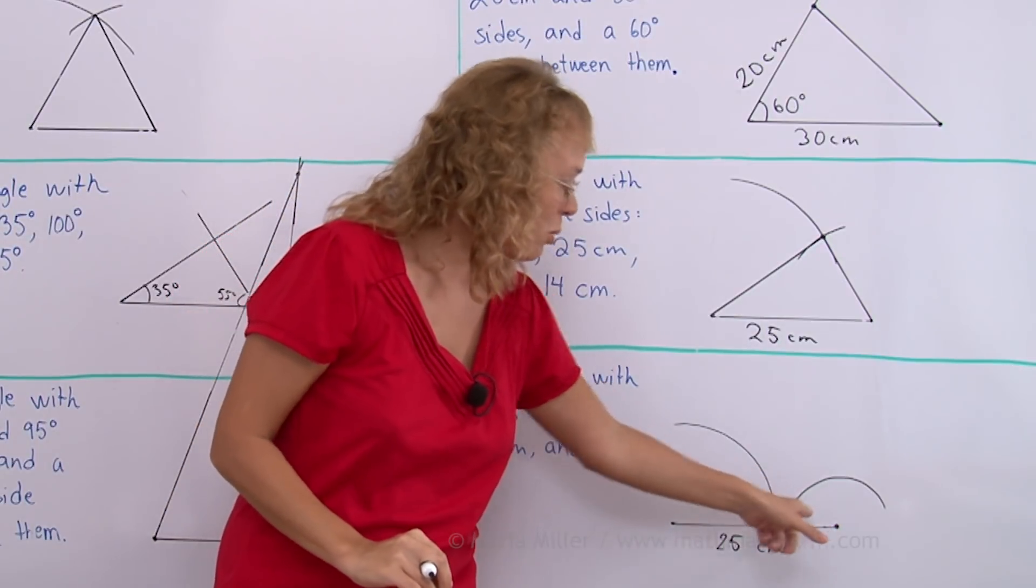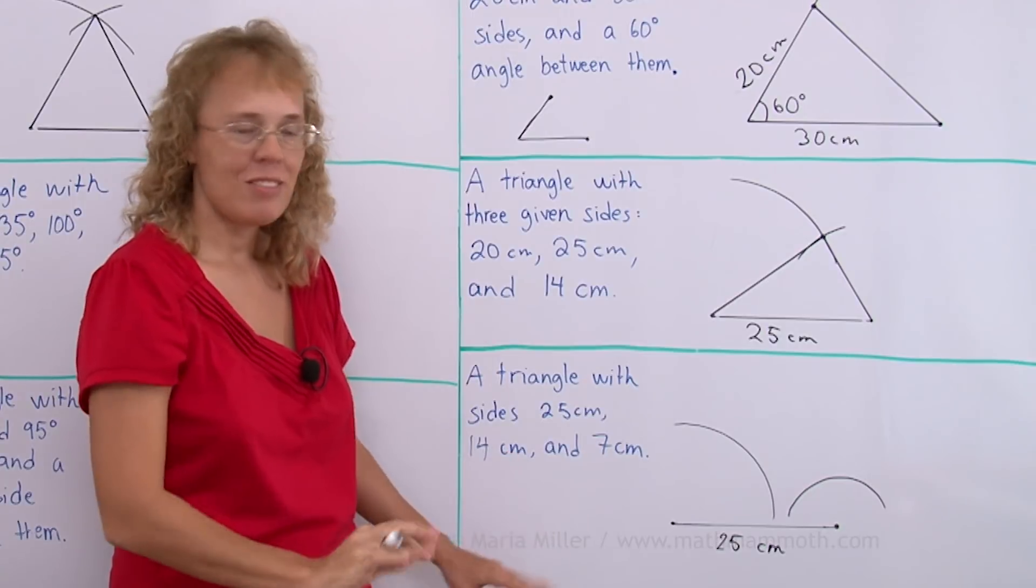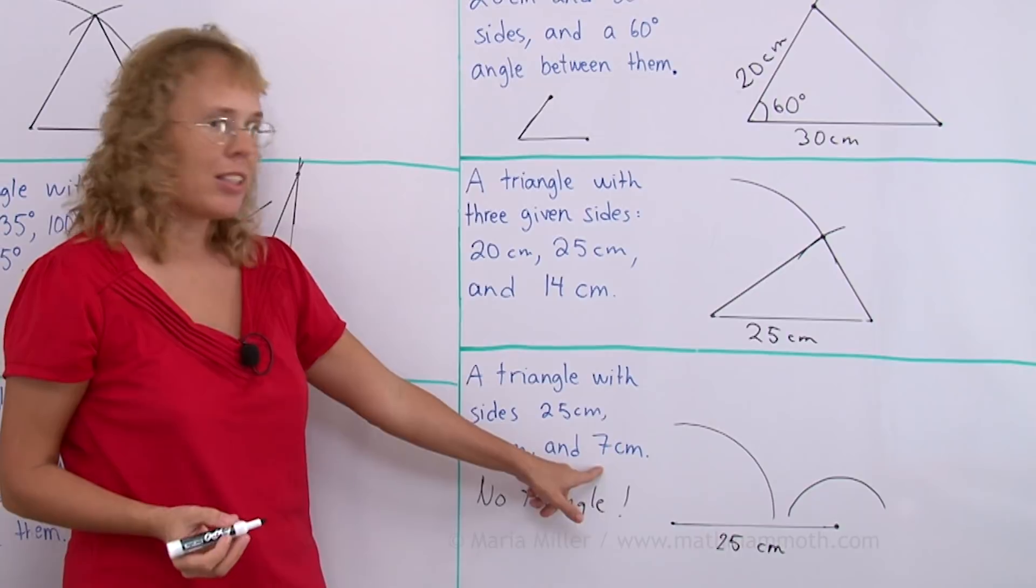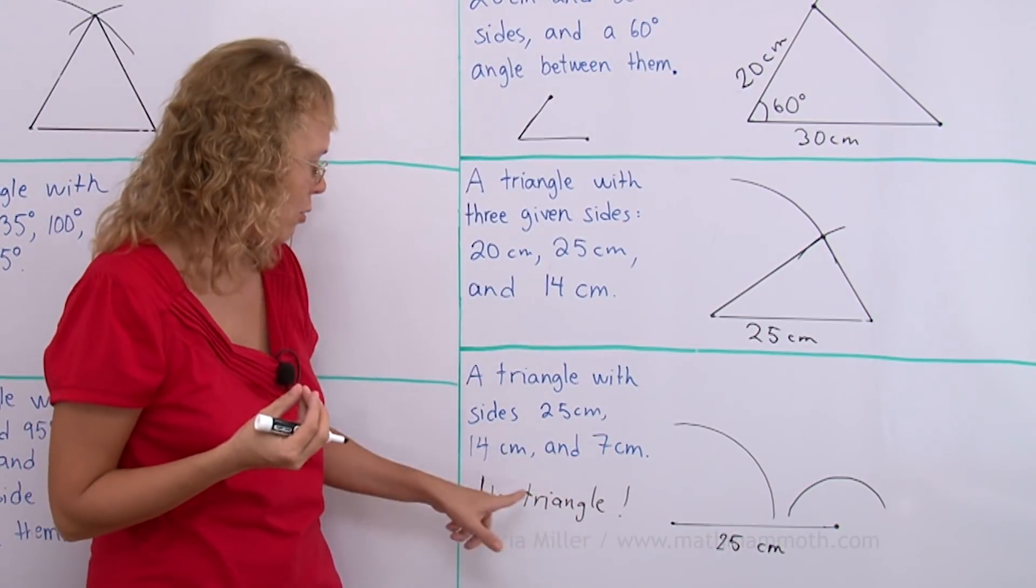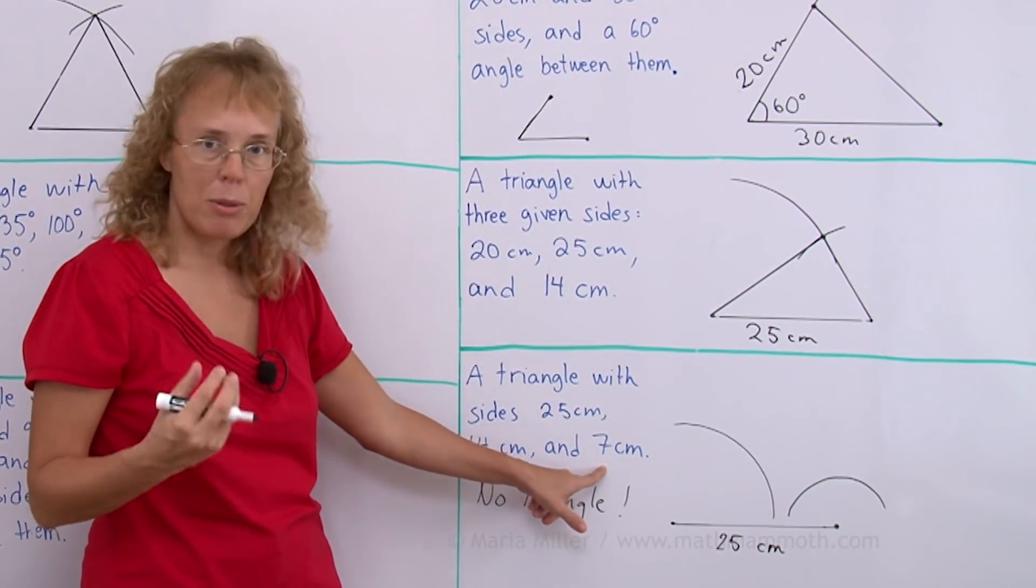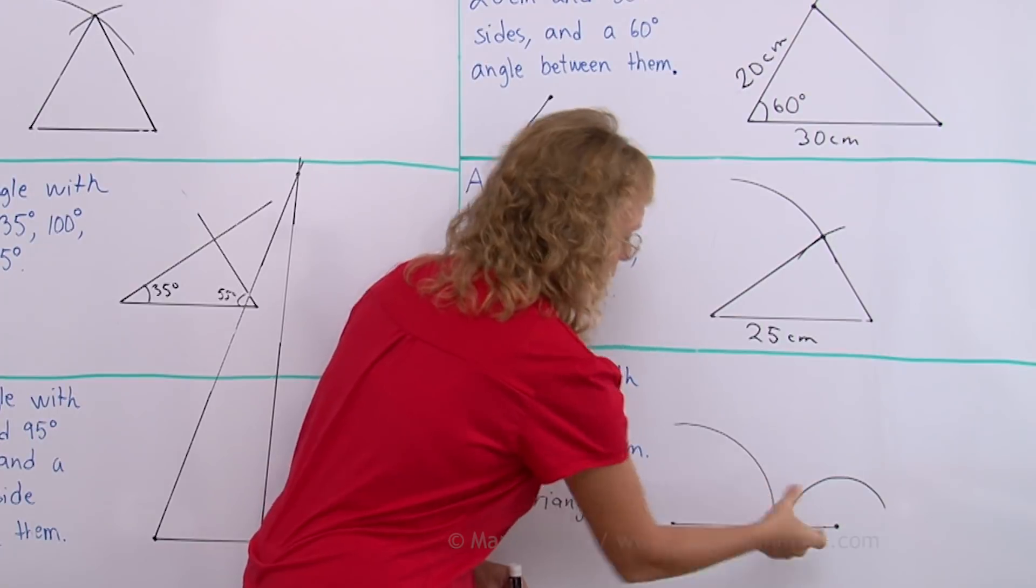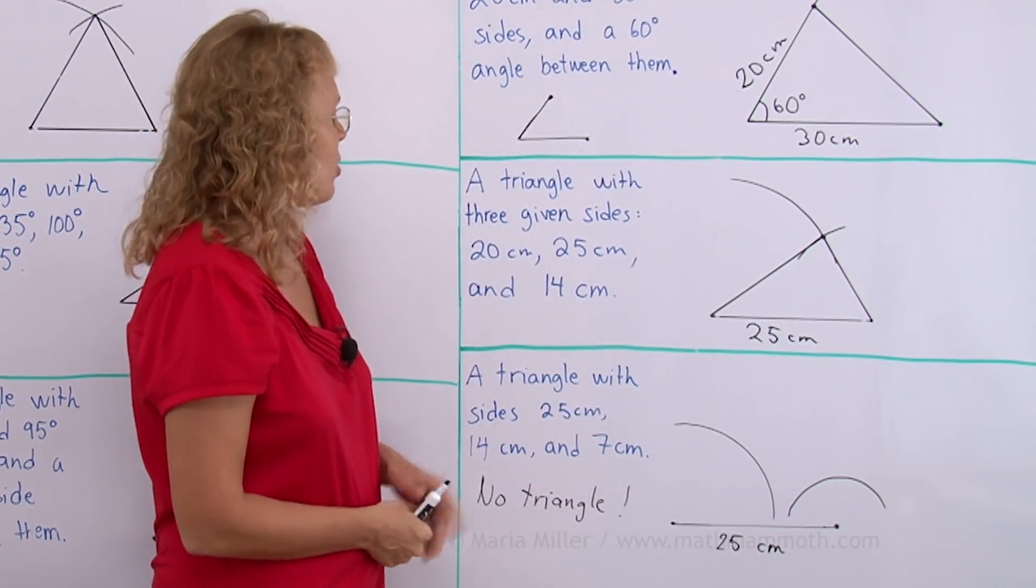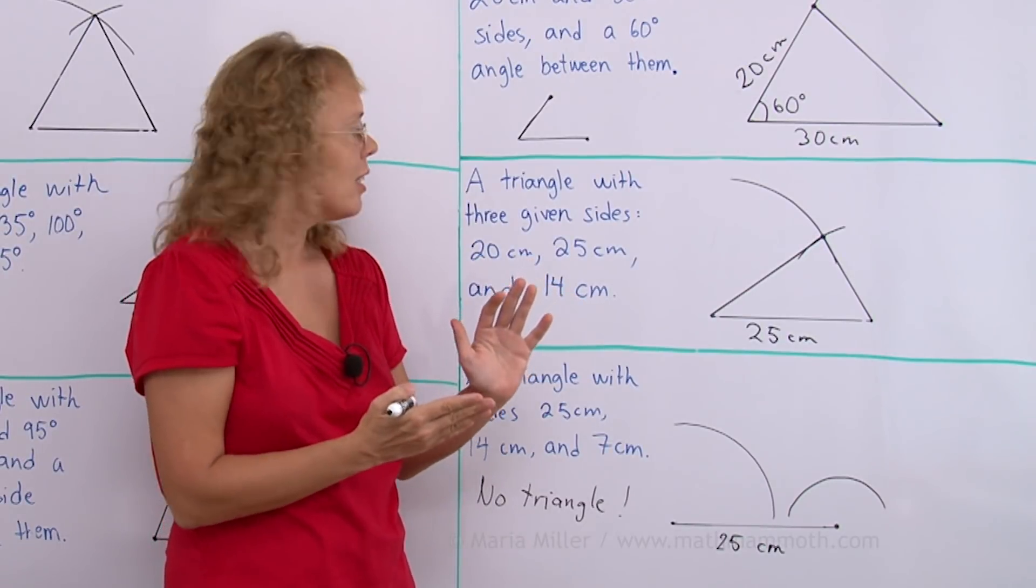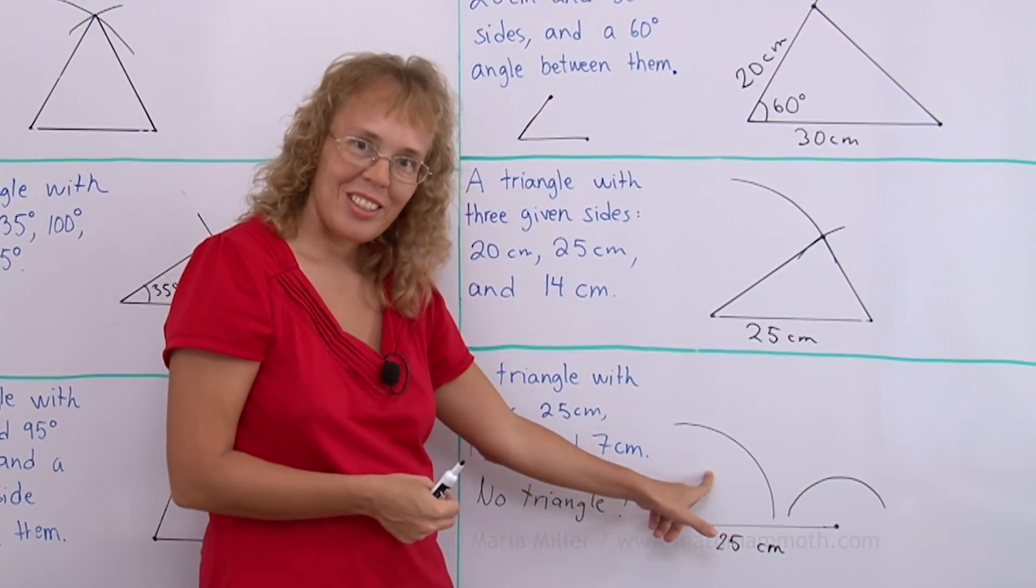So what happened here? My circular arcs don't meet. So therefore there is no triangle with this information. I'm going to write it here. No triangle. This 7 centimeters is too little or this 14 is too small an amount. I would need to increase one or the other to become a bigger number. So I would get a bigger radius here or bigger radius here. So they would actually meet and I would get the triangle. So when you are given three numbers as side lengths for a triangle, then you will either get the one unique triangle or no triangle at all.